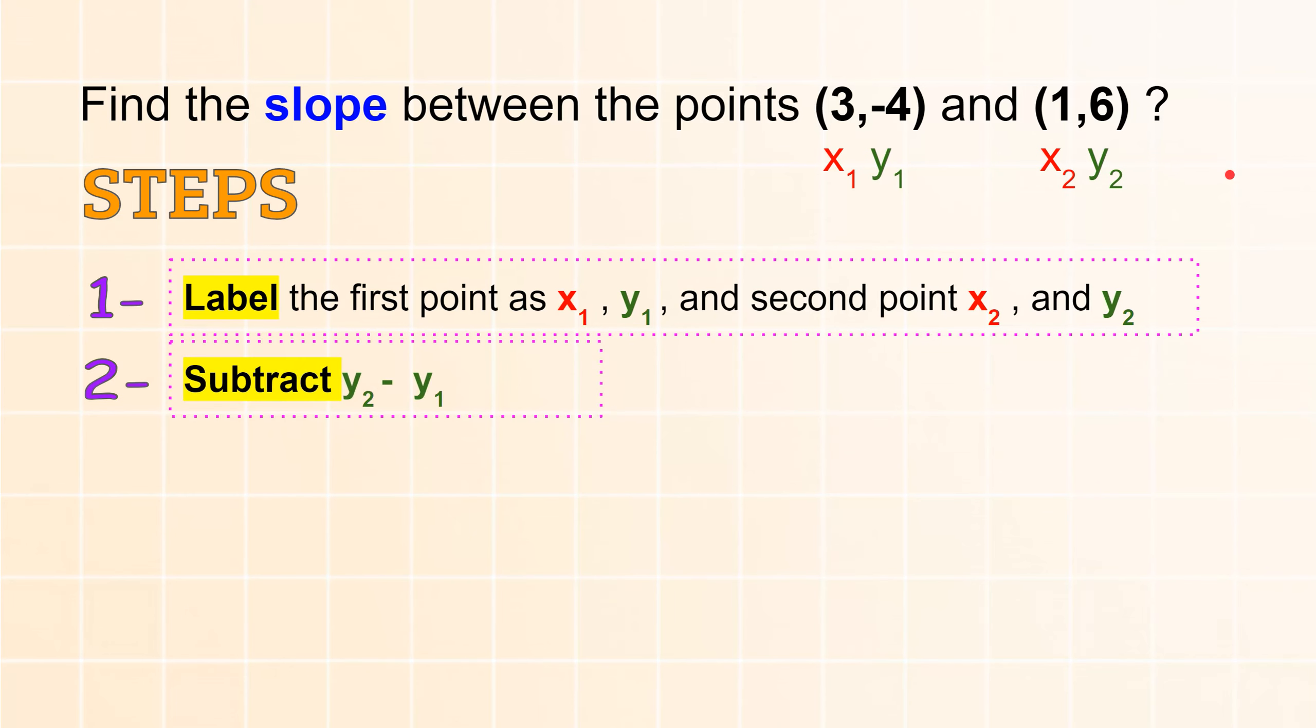The second one is to subtract the y's, y2 minus y1. So in this case it would be 6 minus negative 4.